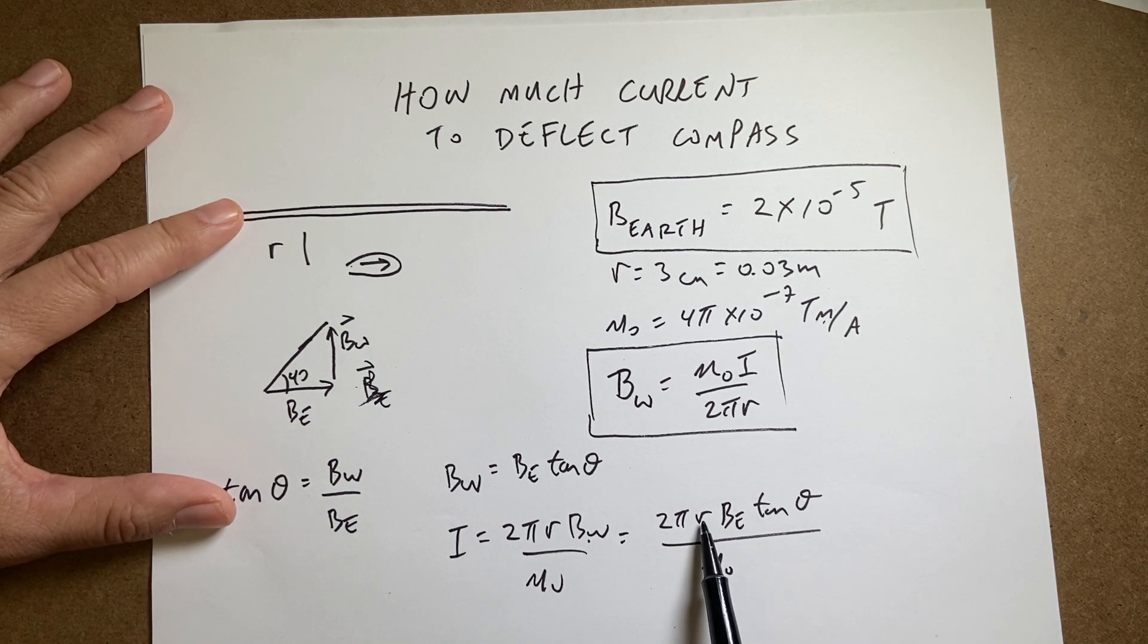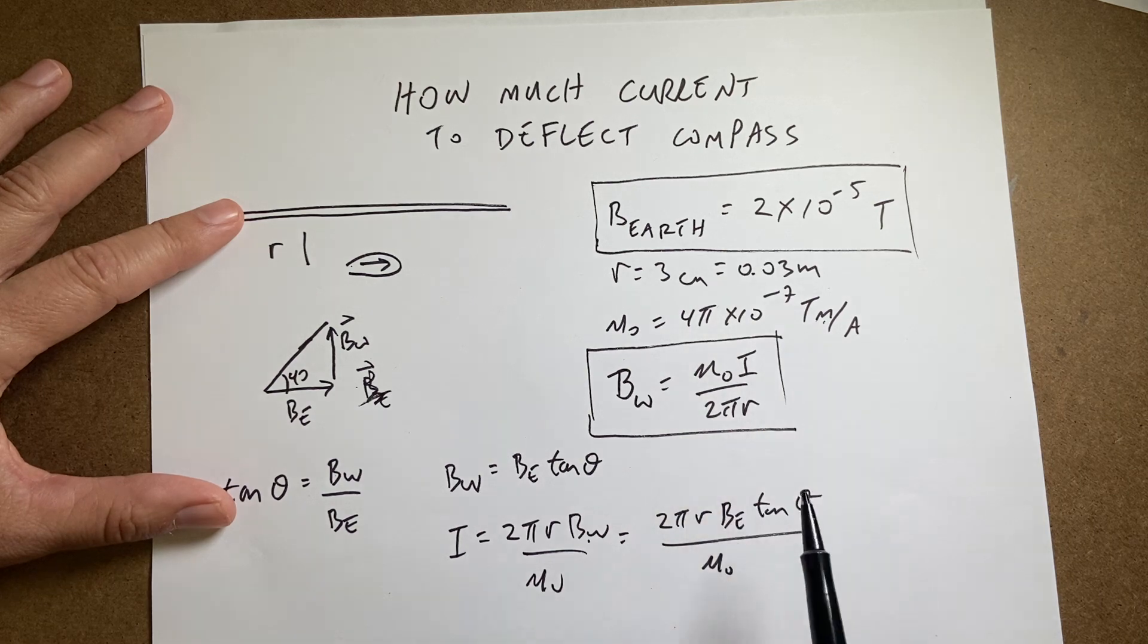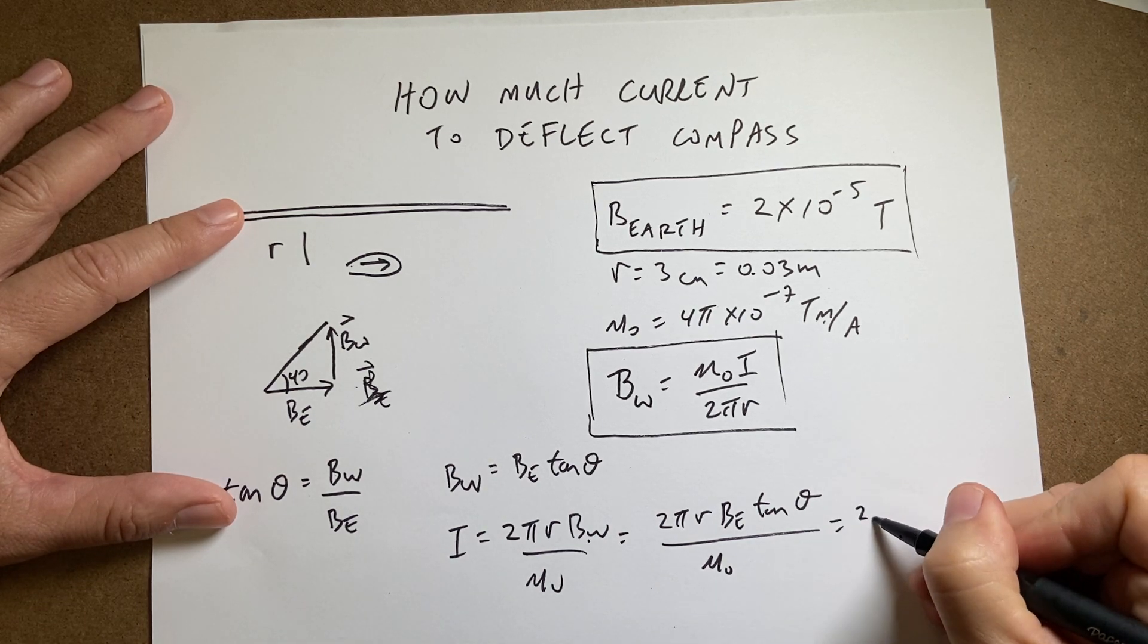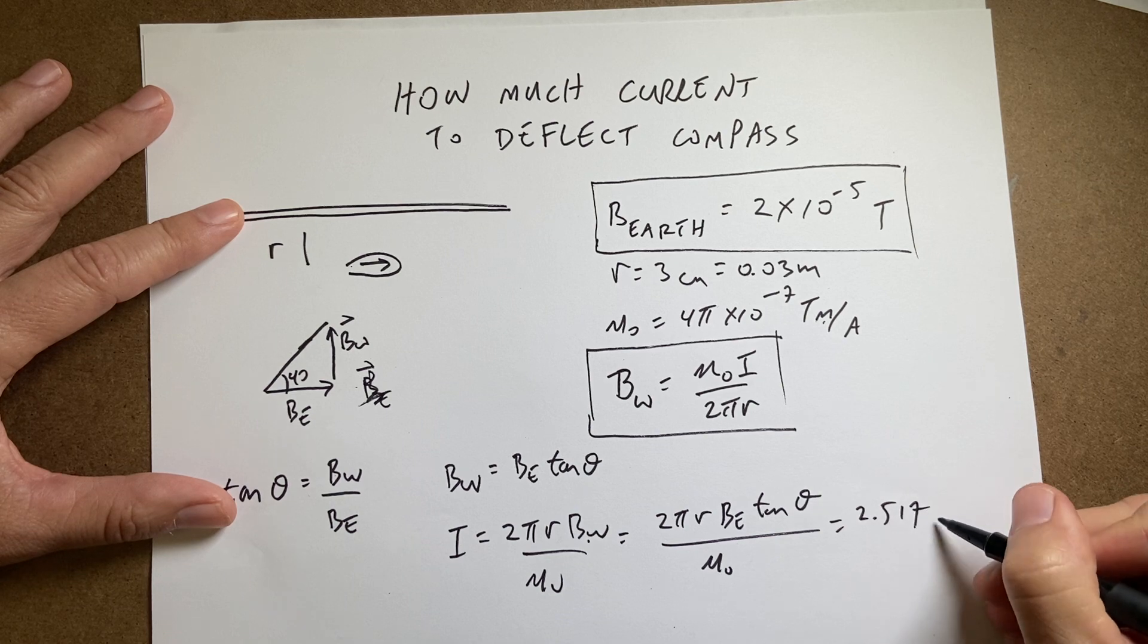So, I know 2, I know pi, I know r, I know B earth, I know theta is 40 degrees, I know mu naught. So, I can put all those in my calculator, which I did in Python, and I'll give you the link, and I get 2.517 amps.